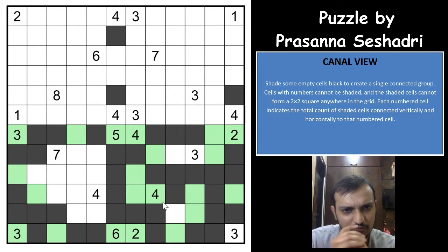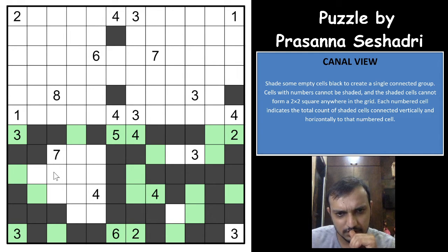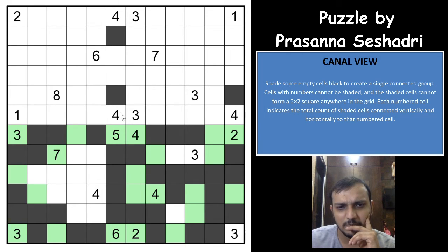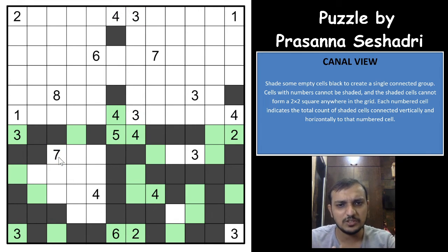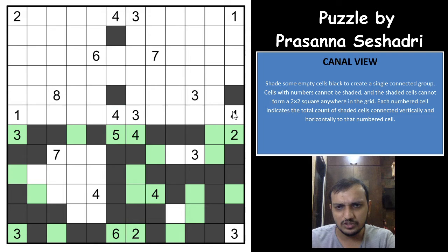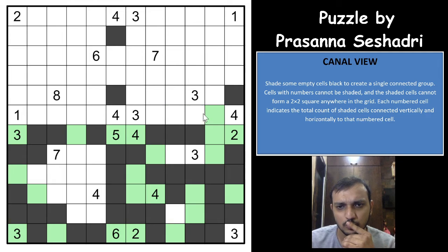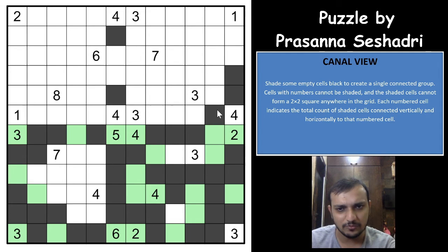What else can we do? For the 7 here, you have 4 cells available. Number cells cannot be shaded — that's not part of the shading. For the 4 here, you can have a maximum of 2 cells in this direction — more would create a 2×2 group — which means 2 cells would have to go this way. You can have a maximum of 3 cells the other way, so 1 cell would have to be this way.